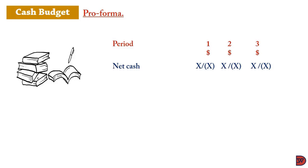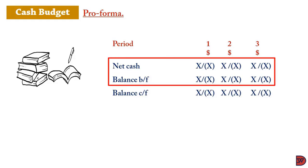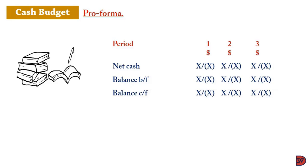For net cash, you net the payments out of the receipts. If receipts are more, it becomes a surplus; if less, it becomes a deficit. The net cash for period one becomes the balance brought forward for period two, and that becomes the balance brought forward for period three. The sum of the net cash and balance brought forward gives you the balance carried forward, which moves into the subsequent period.